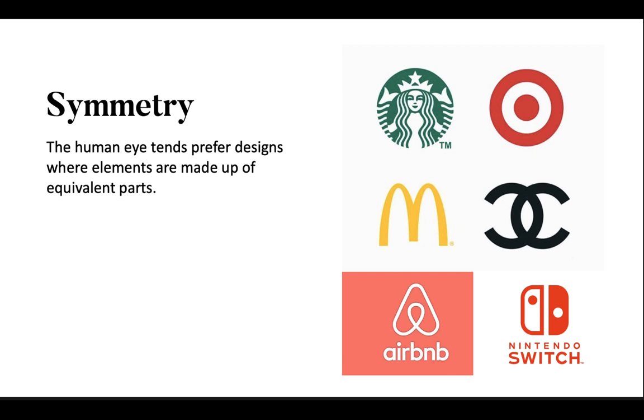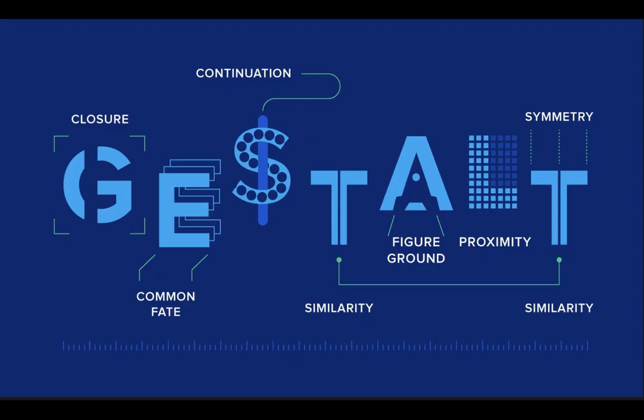Symmetry principle states that the human eye tends to prefer a design where elements are made up of equivalent parts. An example of symmetry would be how humans have two equivalent elements like eyes, ears, hands, and legs forming symmetry. The goal is to bring balance to compositions using symmetry. Our mind perceives symmetrical objects as part of the same group. They create an impression of stability and order.